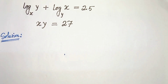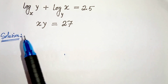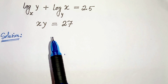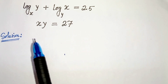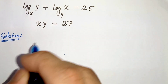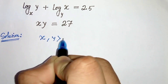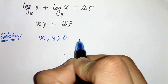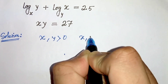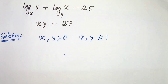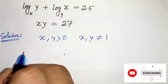First of all, we have to note that x and y must be greater than 0 and they cannot be equal to 1, otherwise the equations won't be valid. So x and y must be greater than 0 and cannot equal 1.